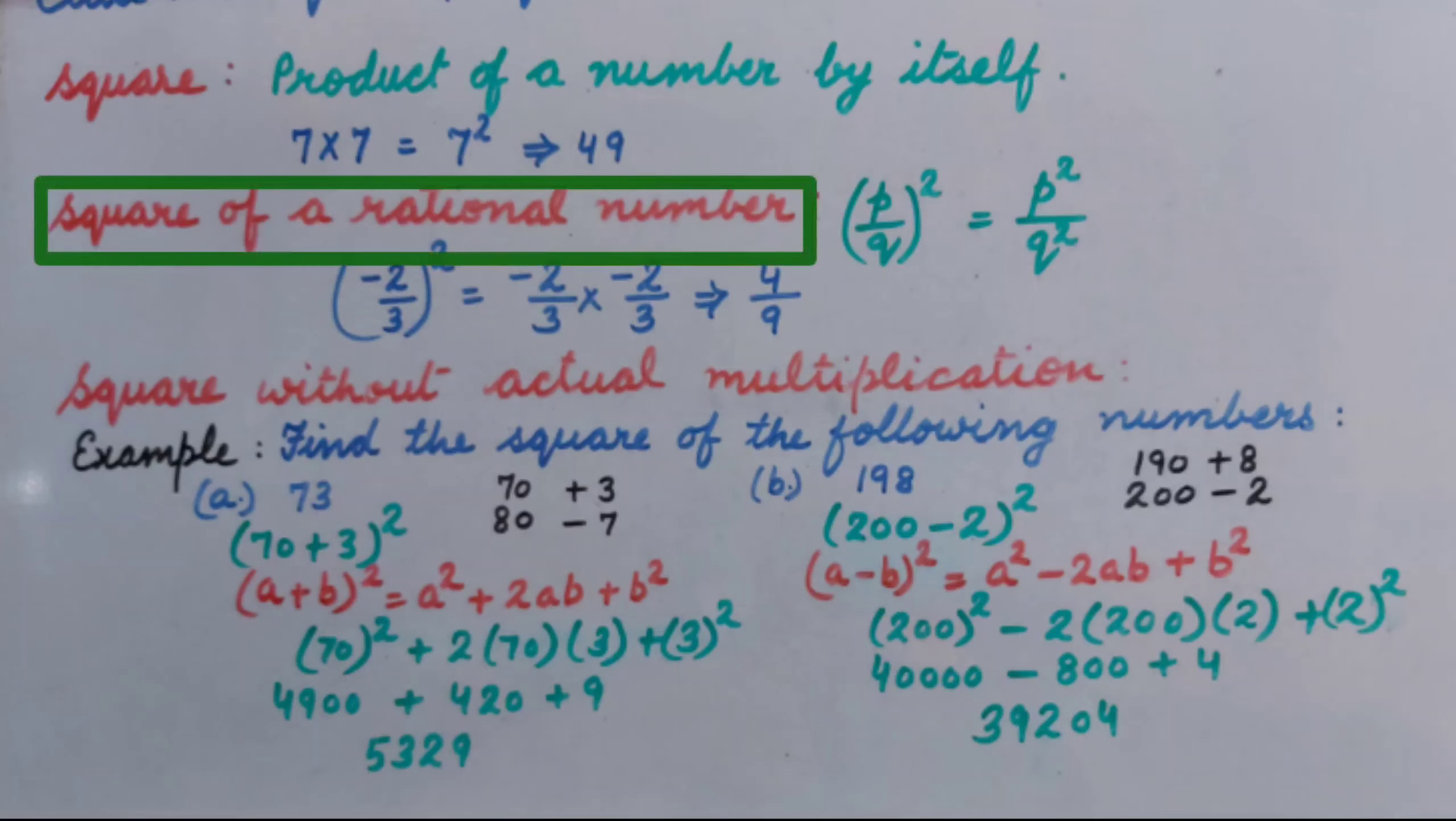How can we find square of a rational number? For that, we will find out the square of numerator to numerator and square of denominator for denominator. P upon Q whole square equal to P square upon Q square.